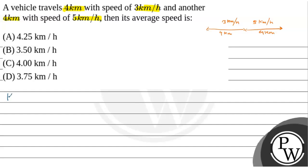Now, the concept here is average speed. Average speed is equal to total distance by total time.